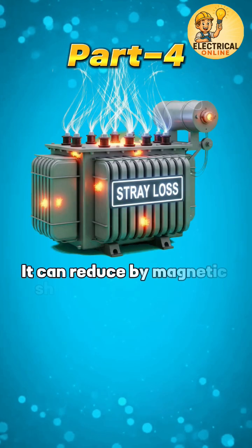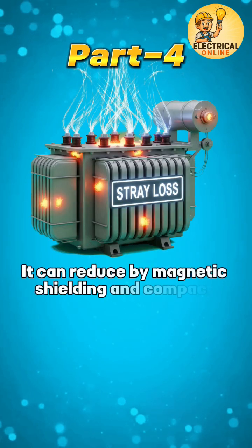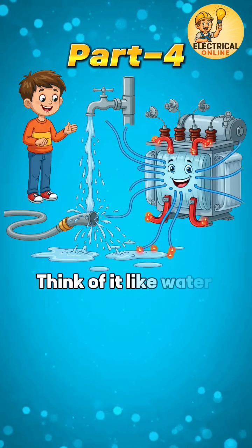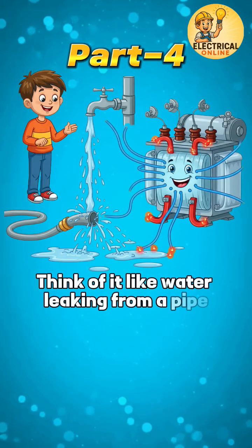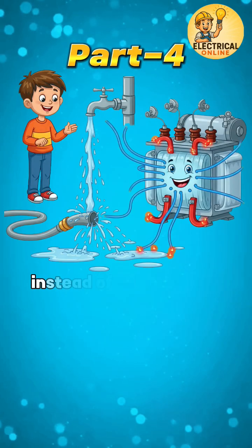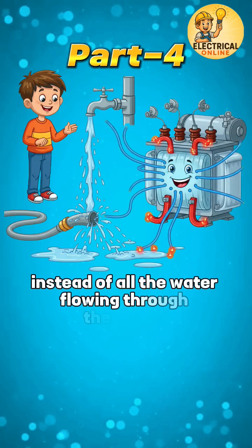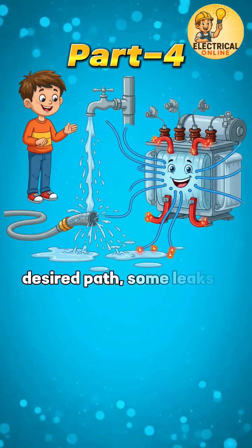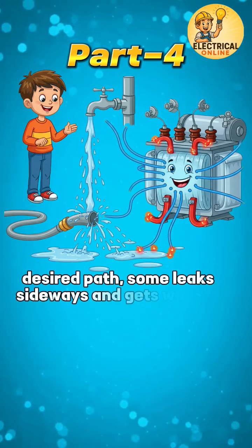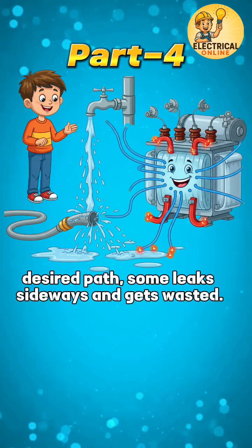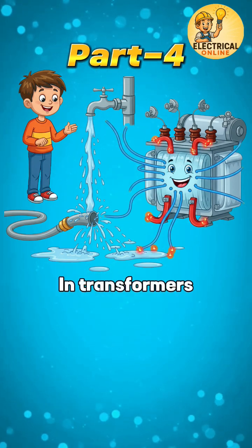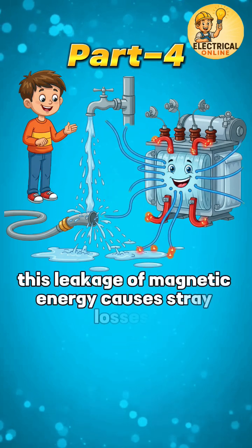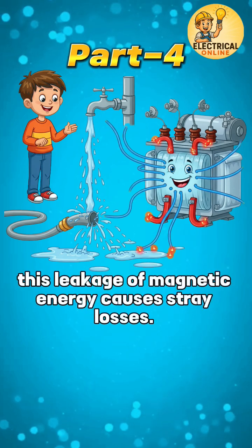It can be reduced by magnetic shielding and compact layout. Think of it like water leaking from a pipe — instead of all the water flowing through the faucet (the desired path), some leaks sideways and gets wasted. In transformers, this leakage of magnetic energy causes stray losses.